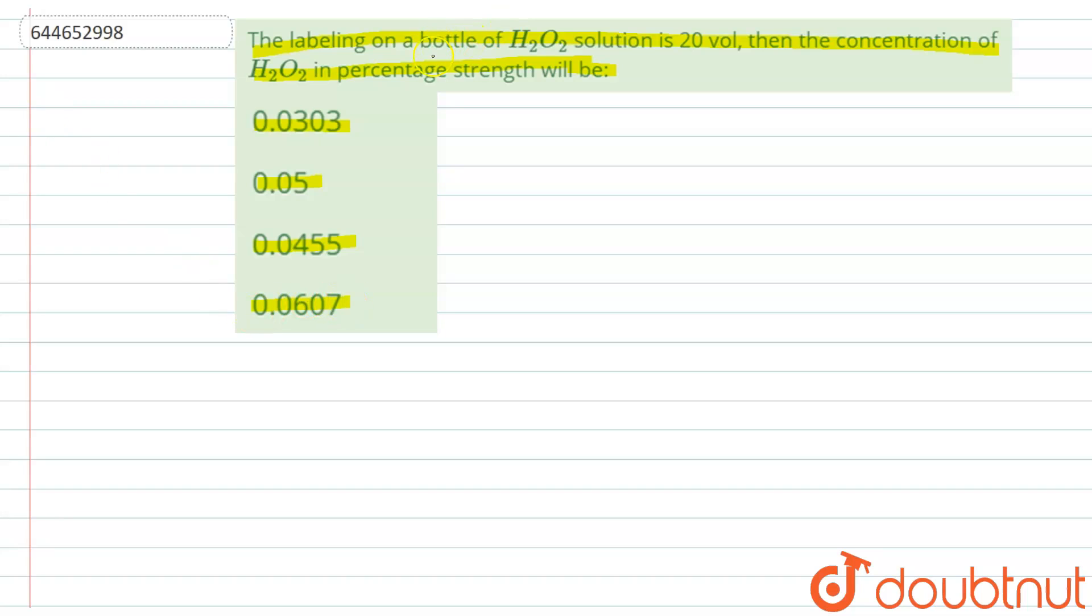So we are given a bottle of H2O2 solution where the volume is given as 20 volts. So this 20 volts is basically the volume of oxygen in it, and the concentration, like the percentage strength, we have to calculate for H2O2.